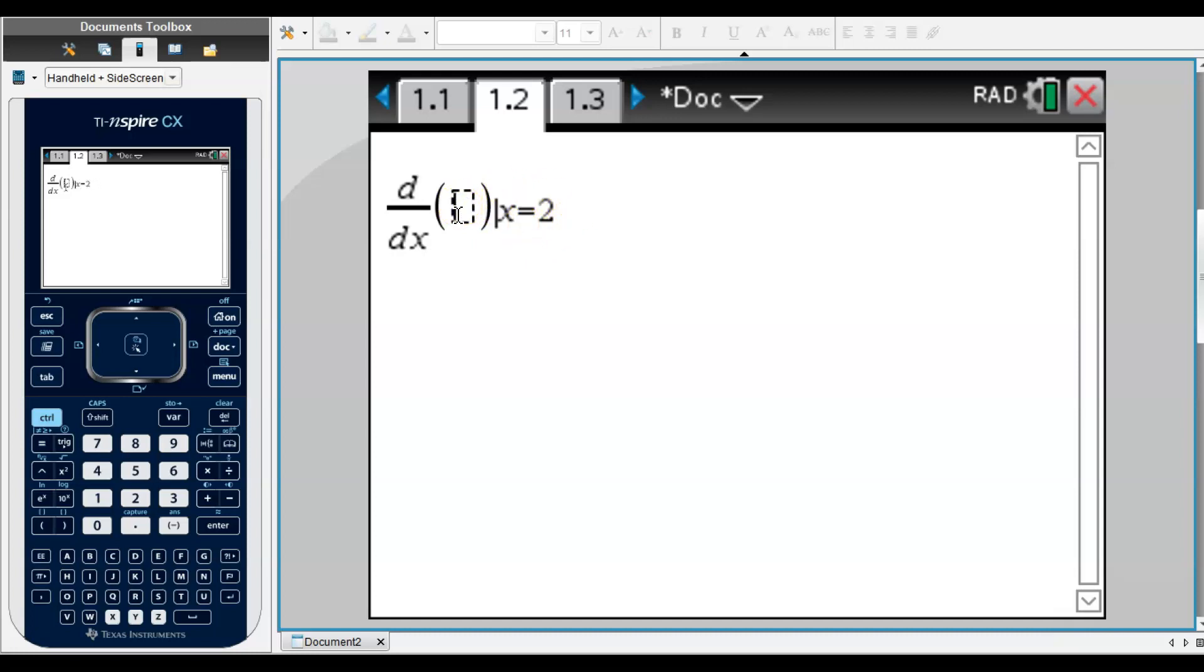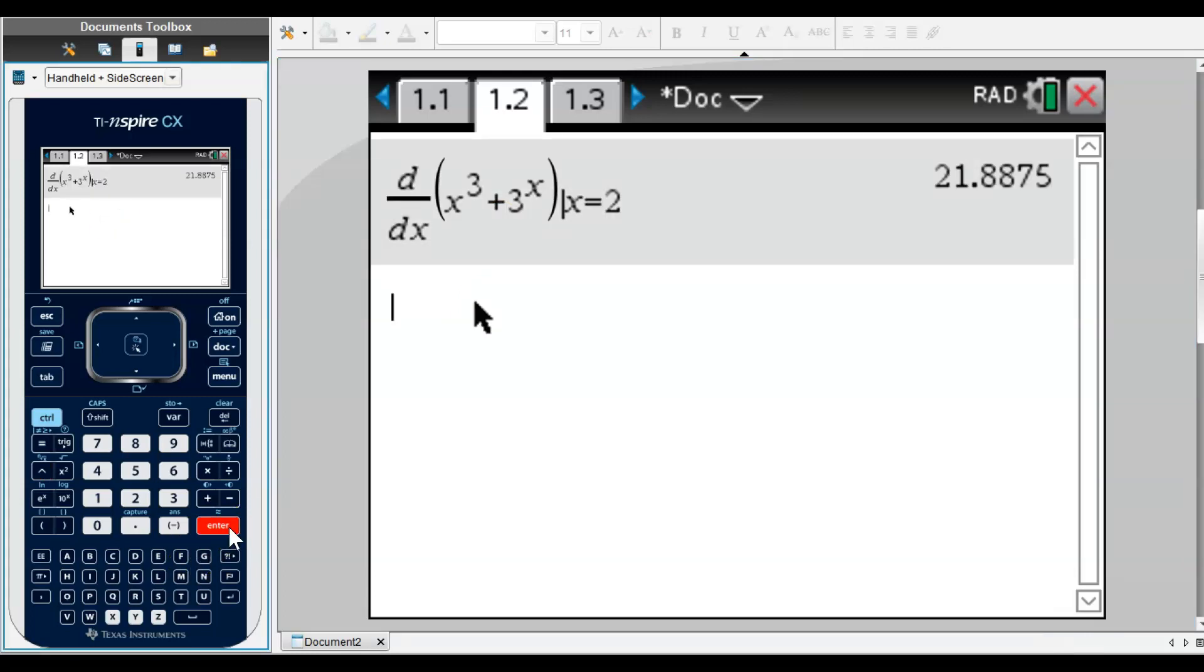Our function is x³ + 3^x. Now that I've entered that, I click Enter, and there is our answer: 21.8875. Note that 21.888 rounded or 21.887 truncated would both earn you credit on the AP exam. That's how you calculate the derivative.